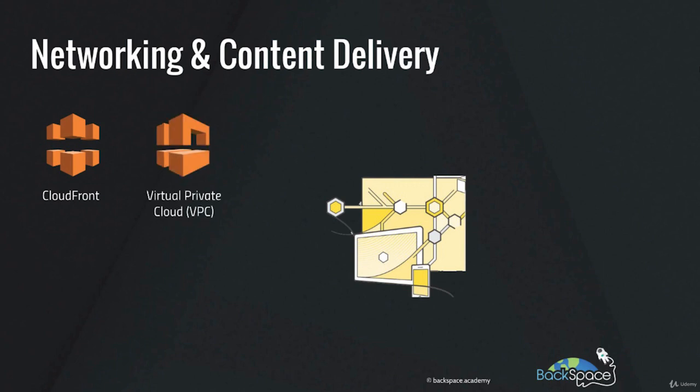Amazon Virtual Private Cloud, or VPC, lets you provision a logically isolated section of the AWS cloud. You can launch AWS resources in that virtual network that you yourself define. This is your own personal private space within the AWS cloud, and no one can enter it unless you allow them to.